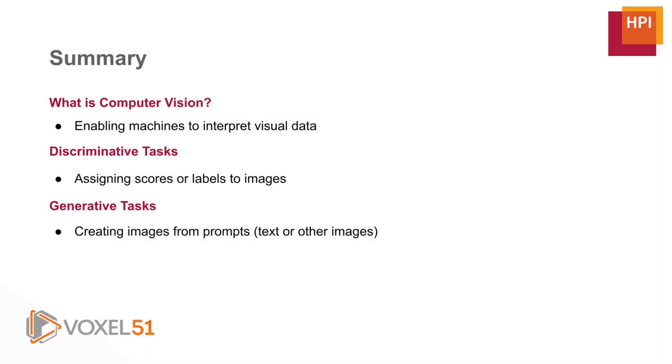So to wrap up this first video, computer vision is about enabling machines to interpret visual data. We discuss two main categories for computer vision tasks: discriminative tasks where we assign scores or labels to images, and generative tasks where we create images from prompts, which can be text or other images.